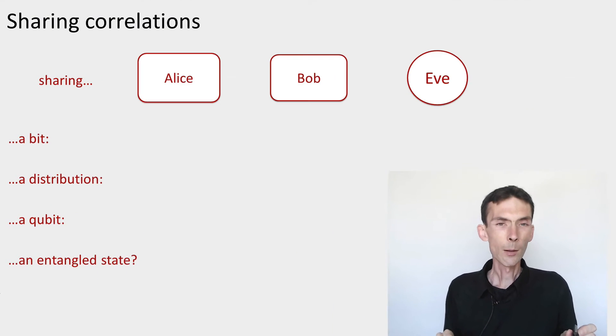This is something we'll make precise much later on. But first, let me describe a little bit more precisely what we mean by this monogamy of entanglement. Let's do some examples.